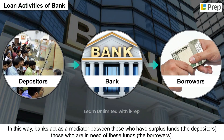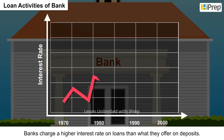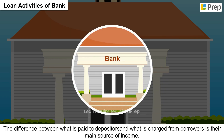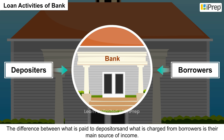Banks act as a mediator between those who have surplus funds — the depositors — and those who are in need of these funds — the borrowers. Banks charge a higher interest rate on loans than what they offer on deposits. The difference between what is paid to depositors and what is charged from borrowers is their main source of income.